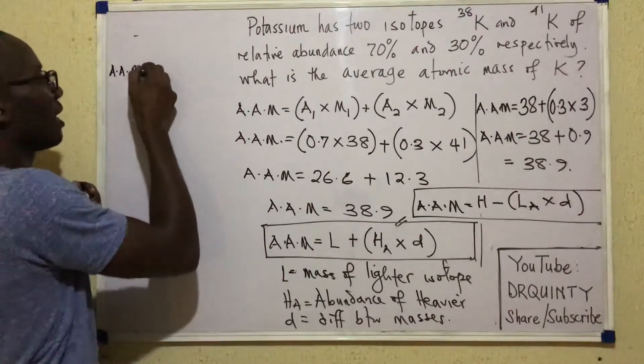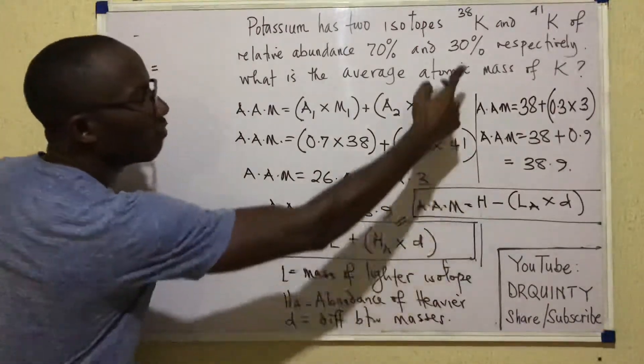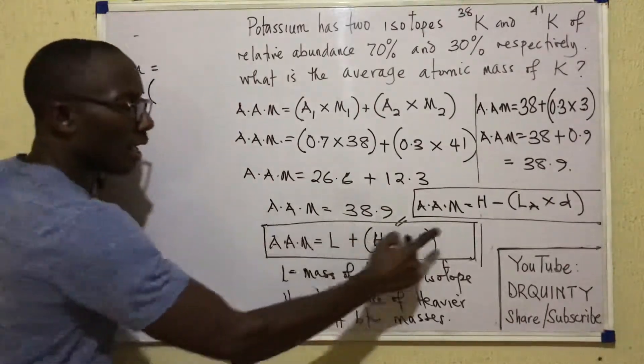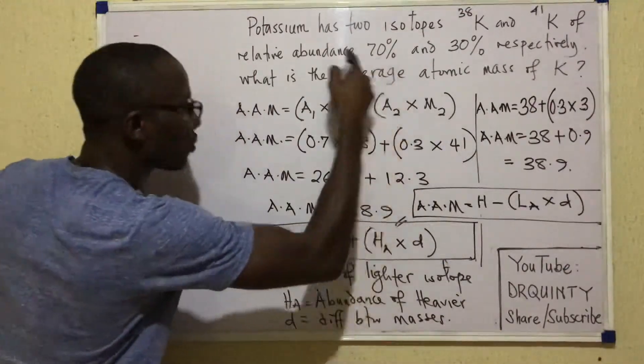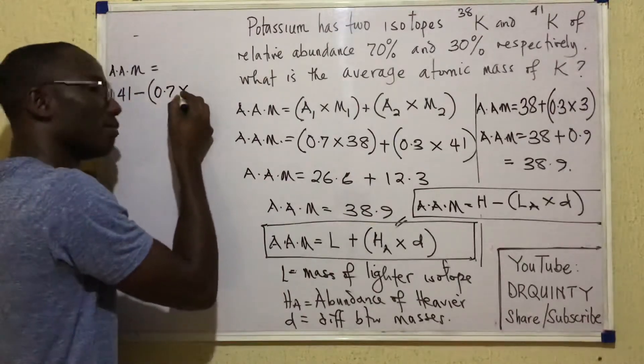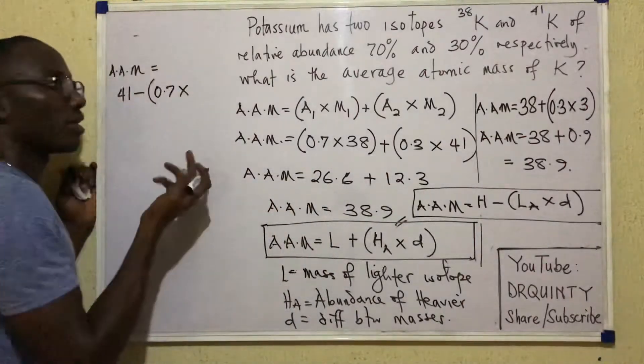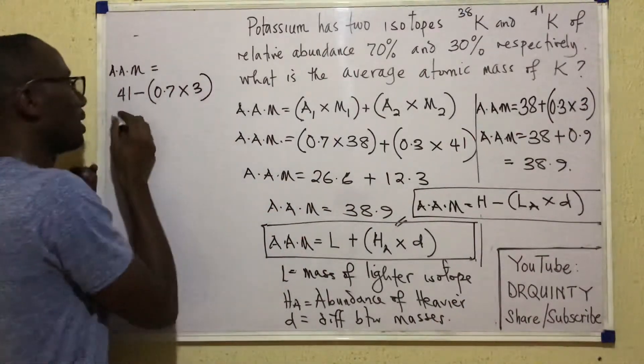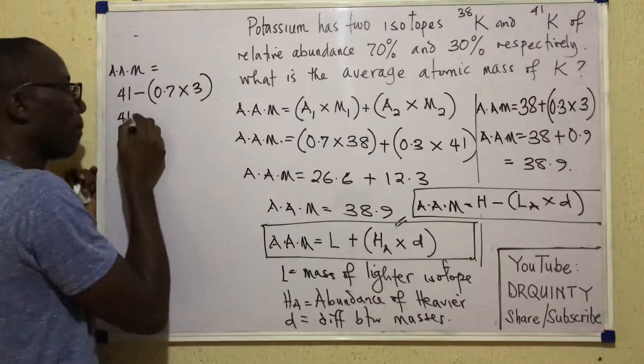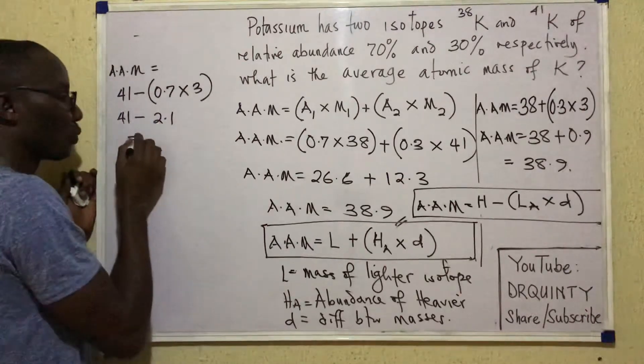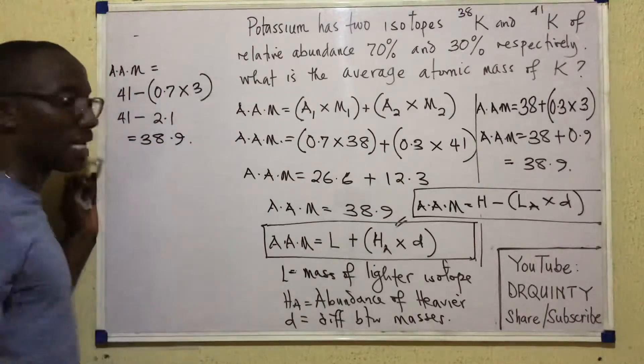So look at this. I can use that other formula. I can say average atomic mass is mass of the heavy isotope, which is 41, minus abundance of the light isotope, which is 0.7, times the difference between these two masses, which is 3. So that gives me 41 minus 2.1. 41 minus 2.1 gives me again 38.9.